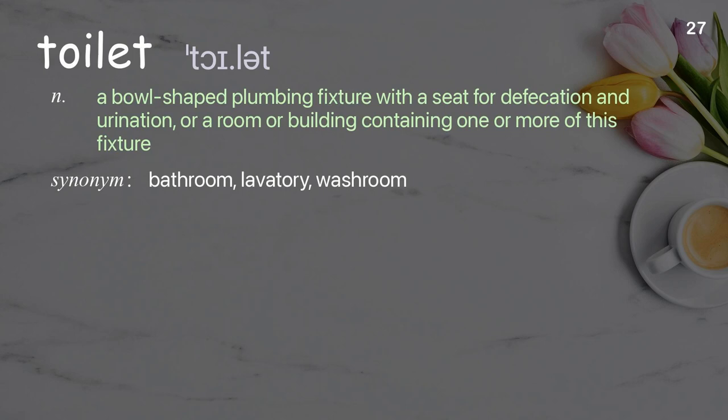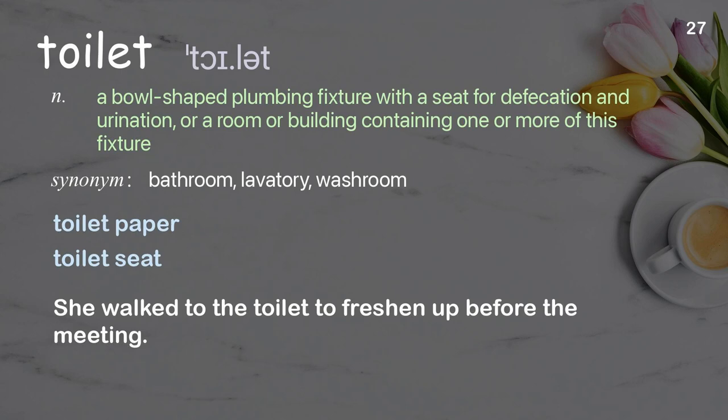Toilet: A bowl-shaped plumbing fixture with a seat for defecation and urination, or a room or building containing one or more of this fixture. Examples: toilet paper, toilet seat. She walked to the toilet to freshen up before the meeting.